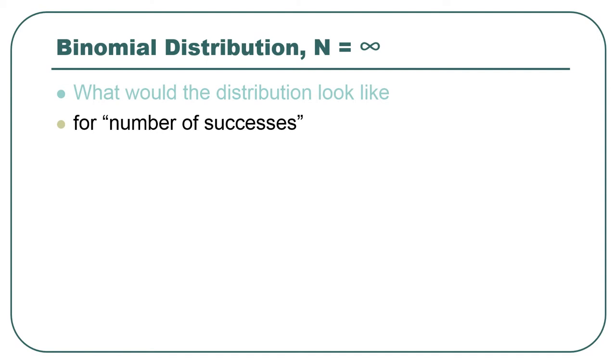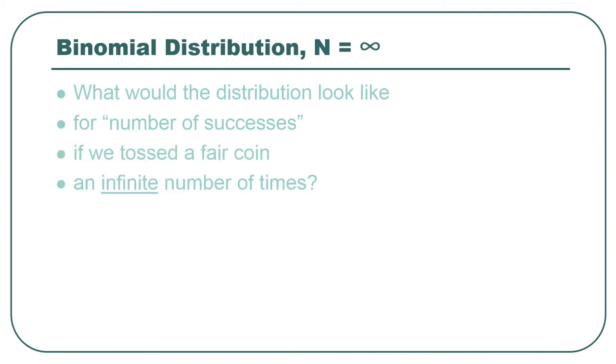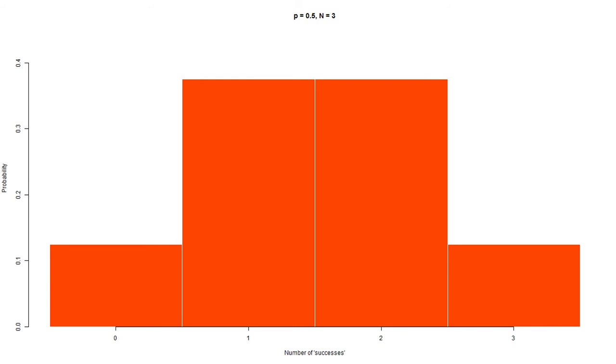So what would that distribution look like? And remember those probability distributions, the x-axis goes from zero up to number of successes. So it would go from zero to infinity in this case. So if we toss this fair coin an infinite number of times, let's just kind of work our way up there from a very non-infinite number of times. This is the distribution of probabilities of getting a certain number of heads or successes if you tossed a coin three times, n equals three. So the probability of zero heads, one head, two heads, or three heads.